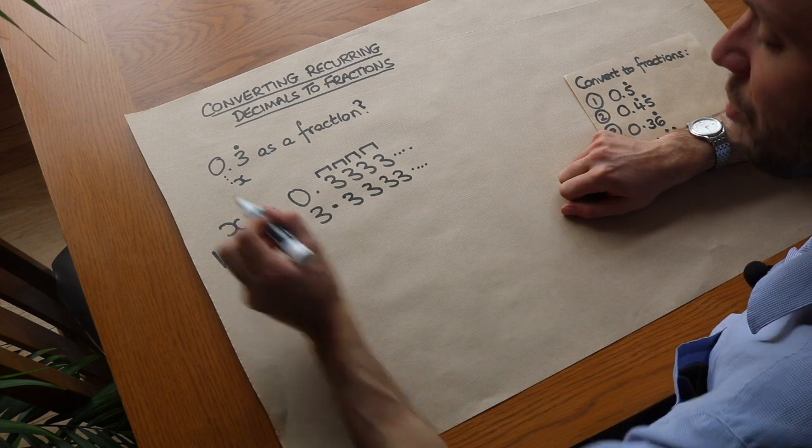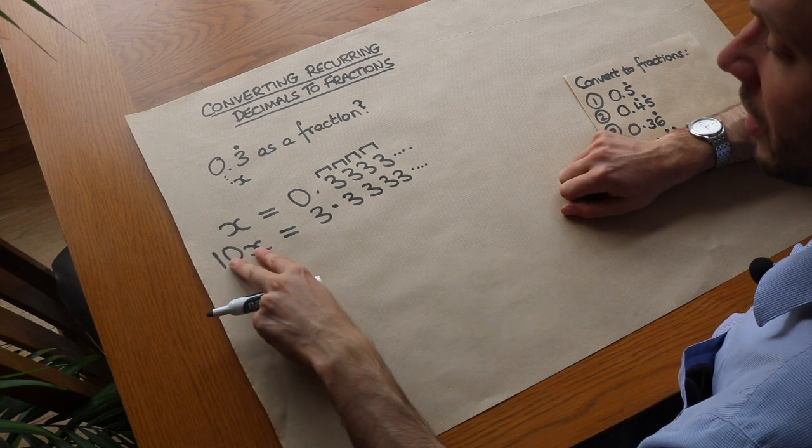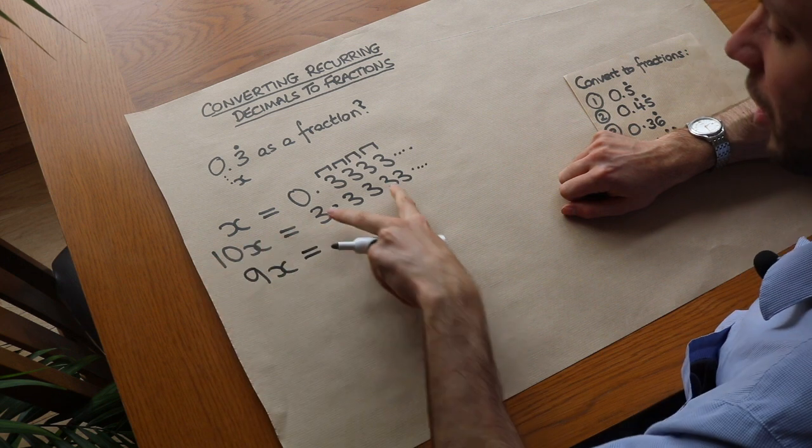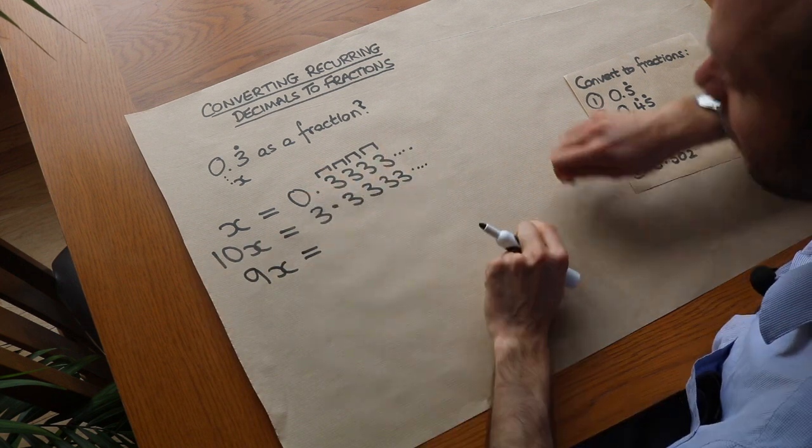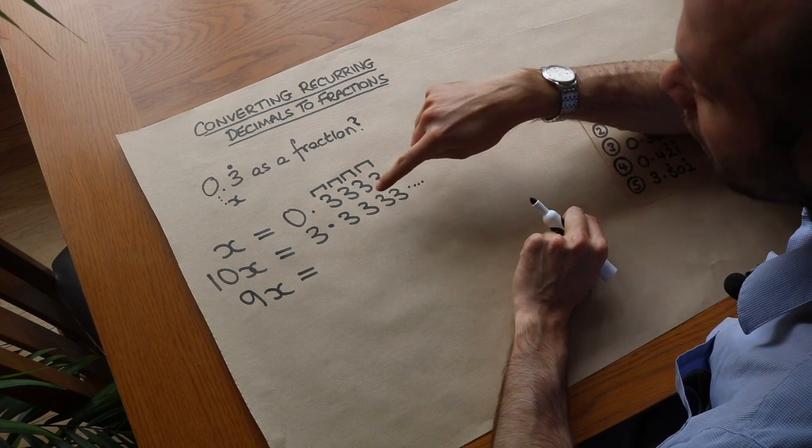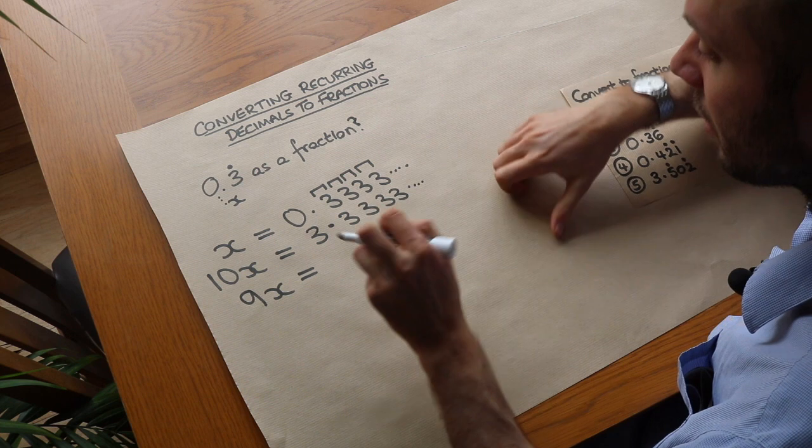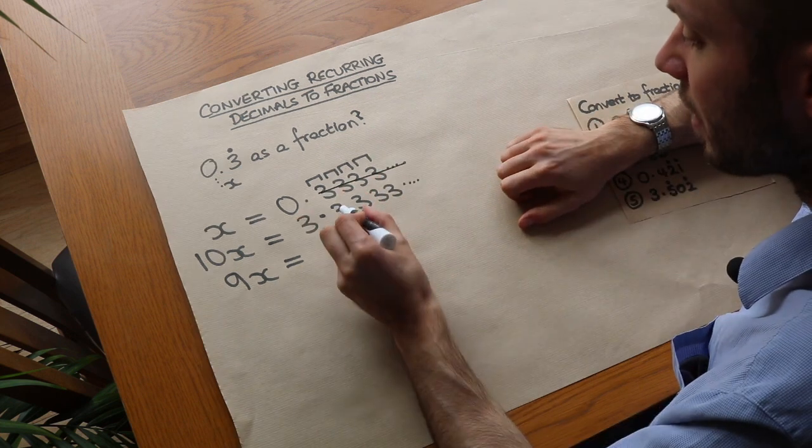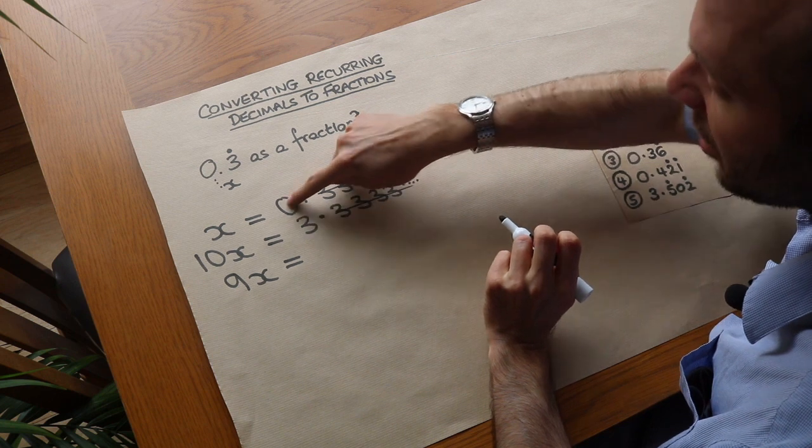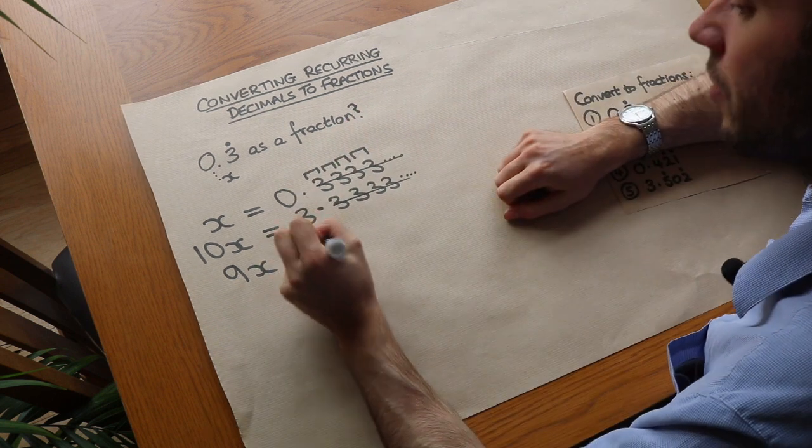And then the trick is that you subtract the two things. We're going to do 10x minus x so we get 9x. And then we're going to do this minus this. Now can you see when you do the 3 minus 3 that's just 0. Now any digits of the same are just going to be 0. So can you see that all of this is going to be wiped out? And all you're going to be left with is 3 minus 0 which is just 3.